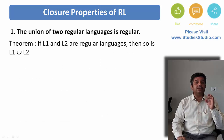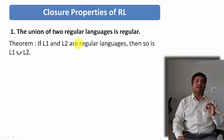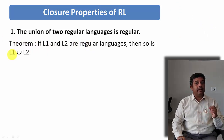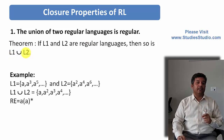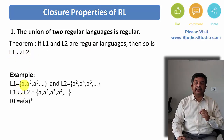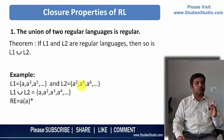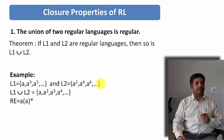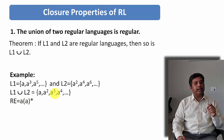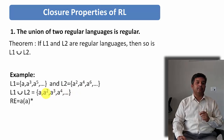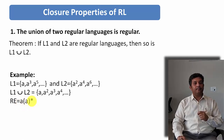Union of two regular languages is regular. The theorem says: if L1 and L2 are two regular languages, then L1 union L2 will also be a regular language. Let us take an example. Let L1 be a regular language containing A, A³, A⁵ — all the odd powers of A. And L2 is another language where the elements are A², A⁴, A⁶ — all the even powers of A. Then if I perform the union operation, I will have A, A², A³, A⁴, and so on. So the regular expression for this is A·A* (A-A-star).